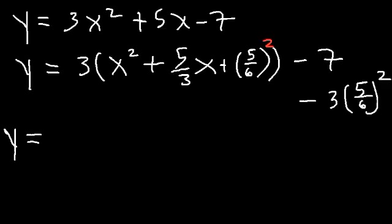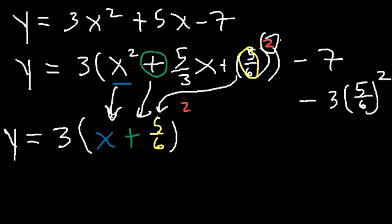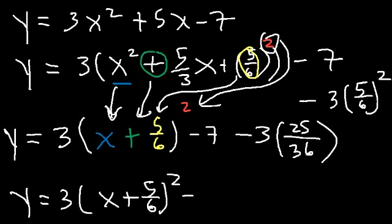Now let's factor. It's going to be x plus 5 over 6, squared. You can literally see everything you need. Then minus 7, minus 3 times 25 over 36. 5 squared is 25 and 6 squared is 36. So we have y equal to 3 times x plus 5 over 6, squared, minus 7. Since 3 goes into 36 to give 12, that term reduces to negative 25 over 12.